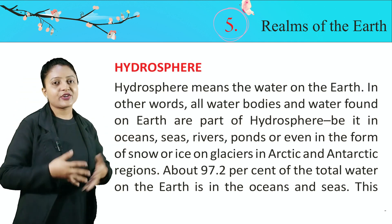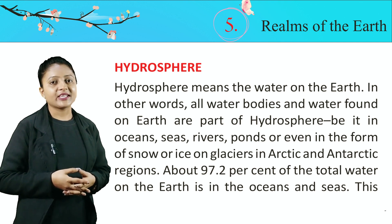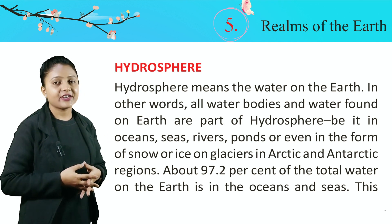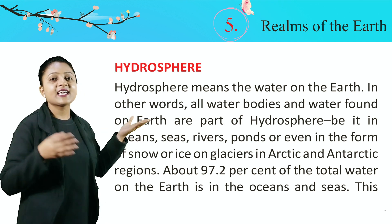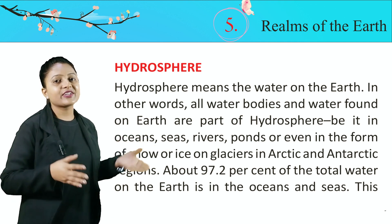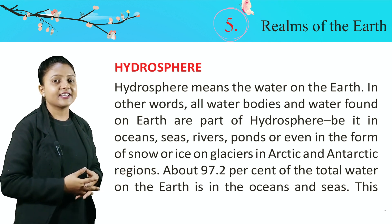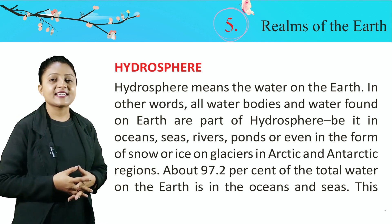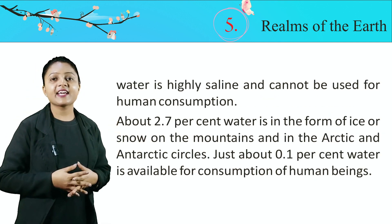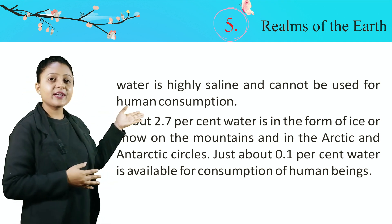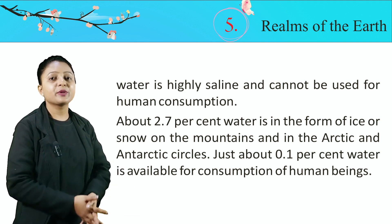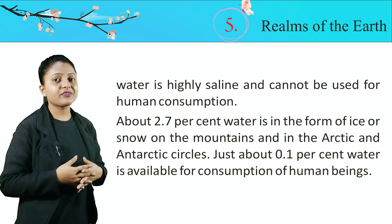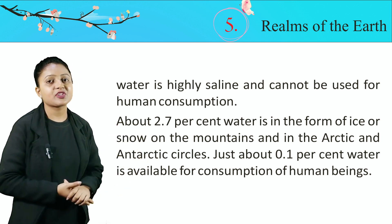Now, let's talk about Hydrosphere. Hydrosphere means the water on the earth. In other words, all water bodies and water found on the earth are part of the hydrosphere, be it in oceans, seas, rivers, ponds, or even in the form of snow or ice on glaciers in the Arctic and Antarctic regions. About 97.2% of the total water on the earth is in the oceans and seas. This water is highly saline and cannot be used for human consumption. About 2.7% of water is in the form of ice and snow on the mountains and in the Arctic and Antarctic circles.